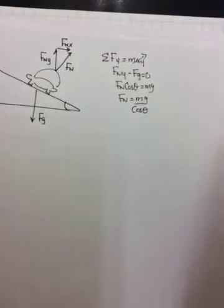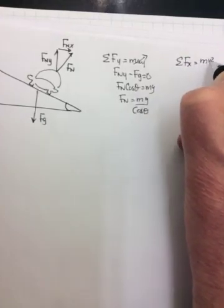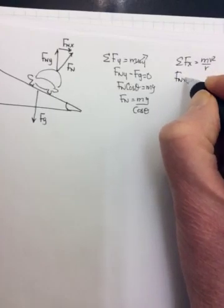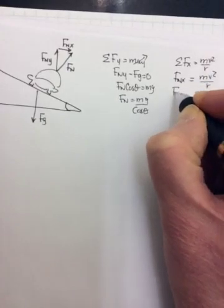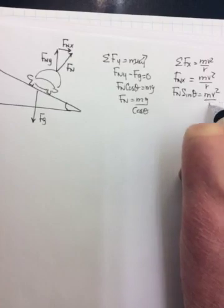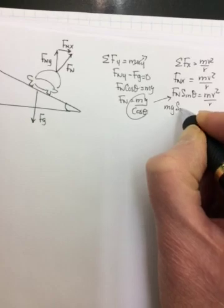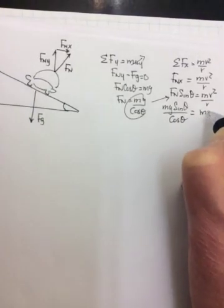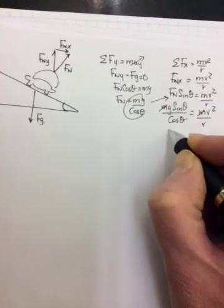Okay, then you go to the x direction. Sum of the forces in the x direction is going to be equal to mv squared over r. And when we're doing perfectly banked, no friction, it's just Fn x equals mv squared over r. And Fn x is Fn sine theta. And now where the Fn is, you're going to sub in mg over cos theta. So it becomes mg sine theta over cos theta is equal to mv squared over r. The m's cancel. The sine over cos becomes tan.